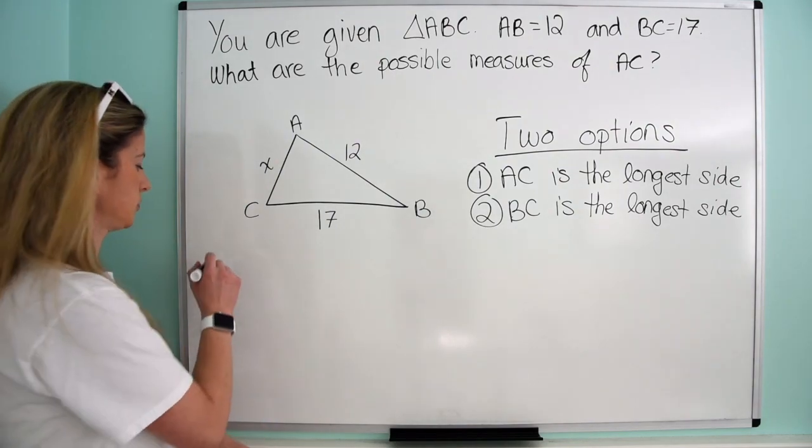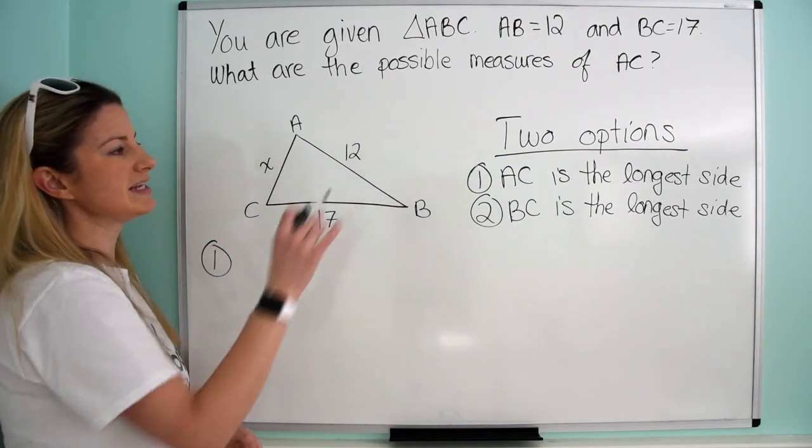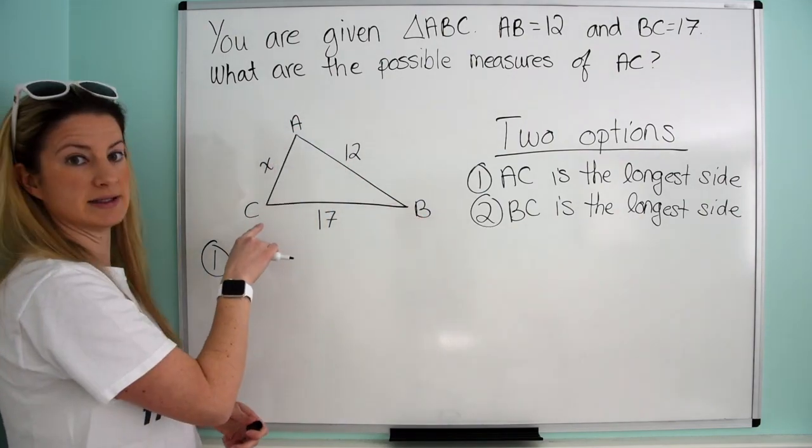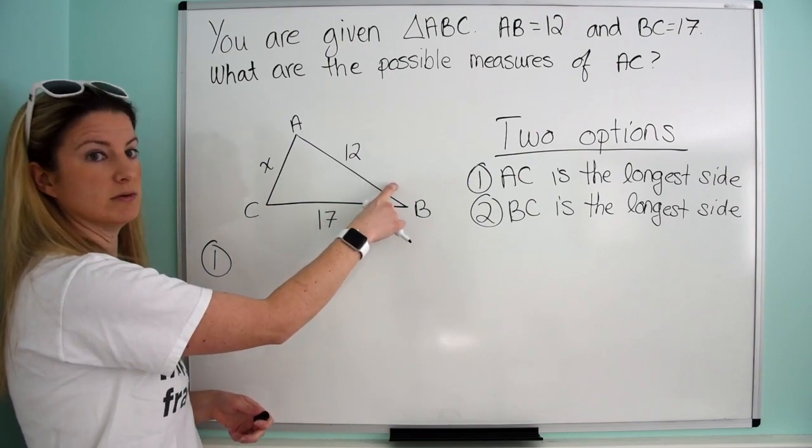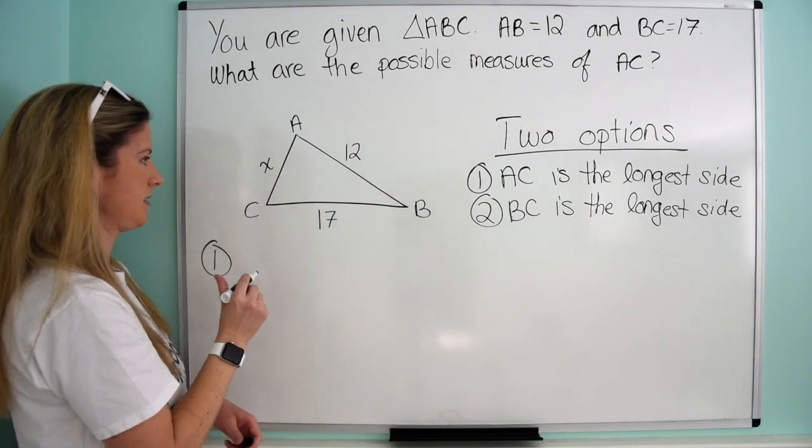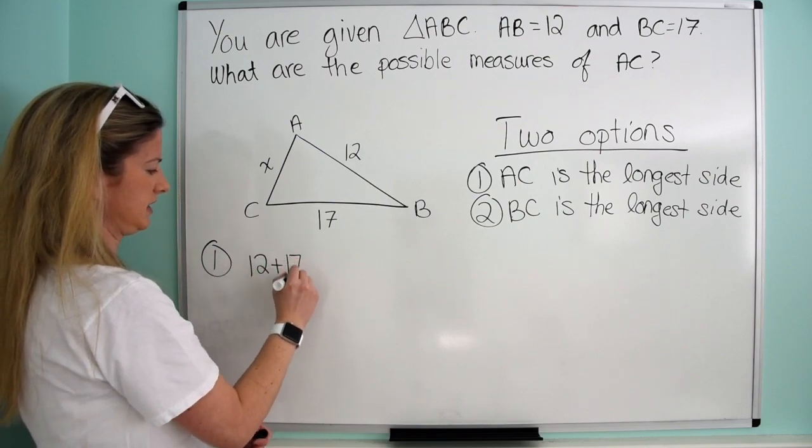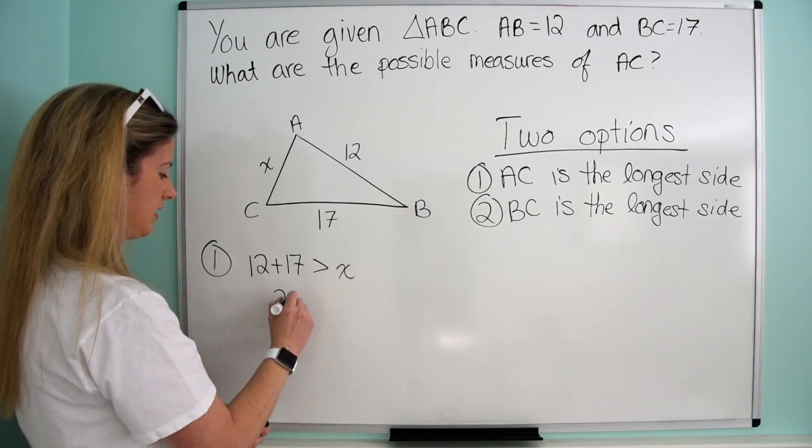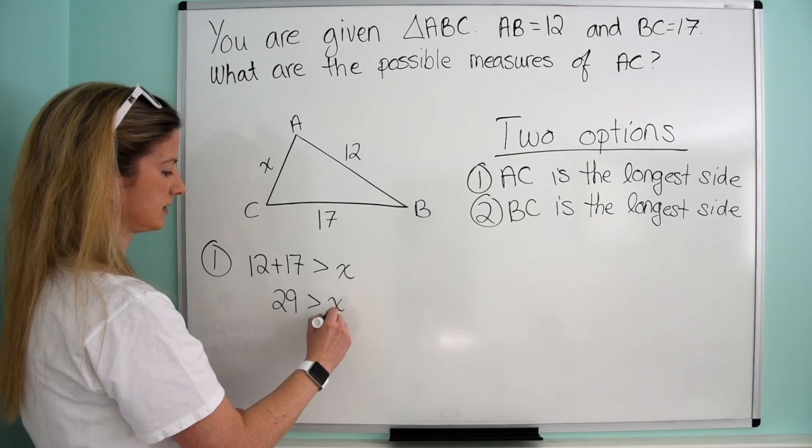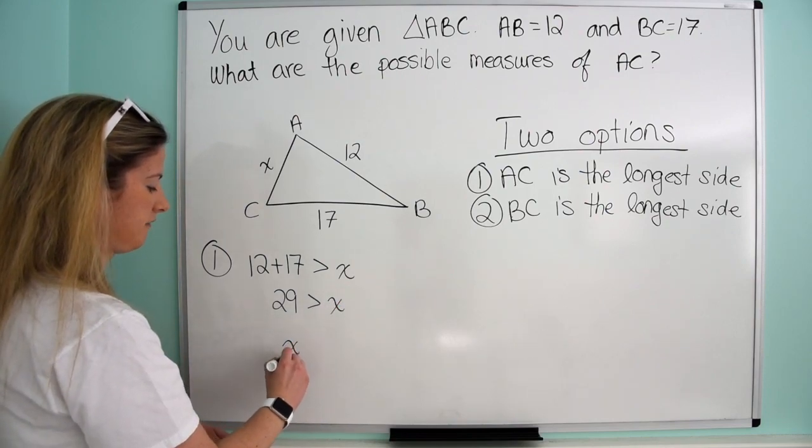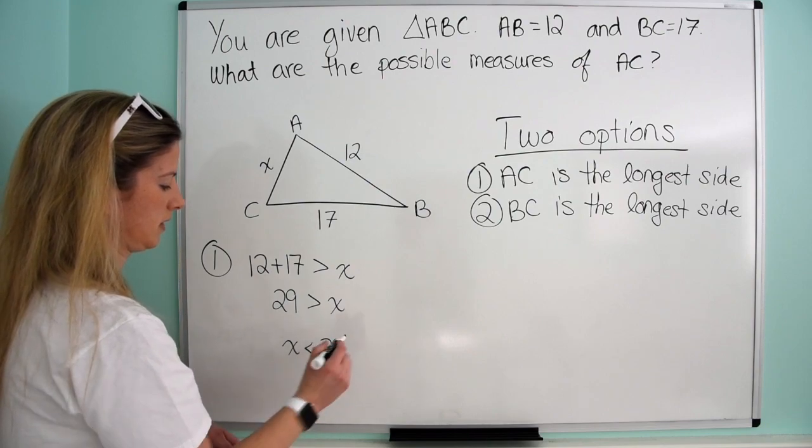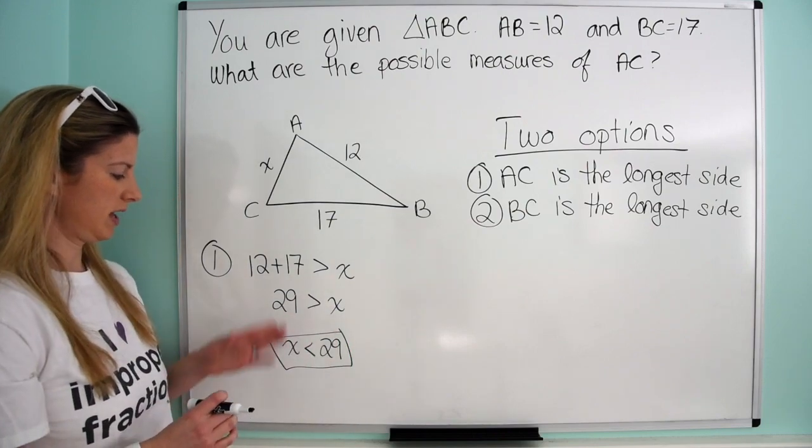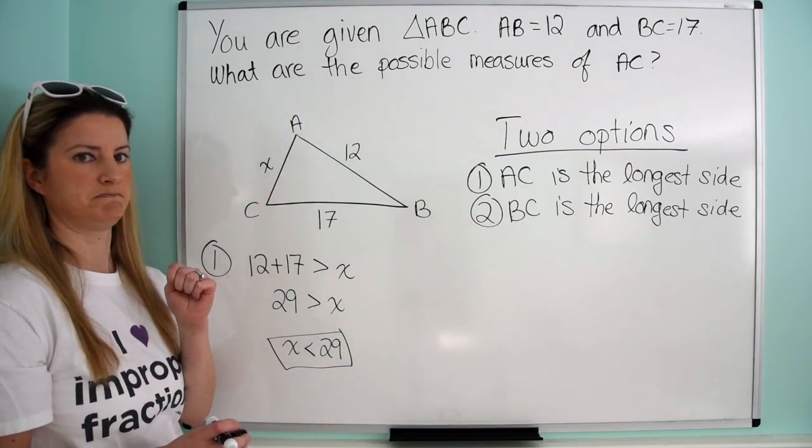Let's think about the triangle inequality theorem. We'll start with option one. If AC is the longest side, then AB plus BC must be greater than AC. So 12 plus 17 must be greater than X. We add these together: 29 is greater than X. Rewriting with the variable on the left, X is less than 29.